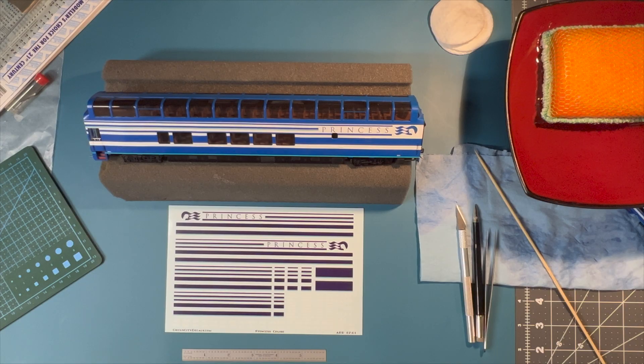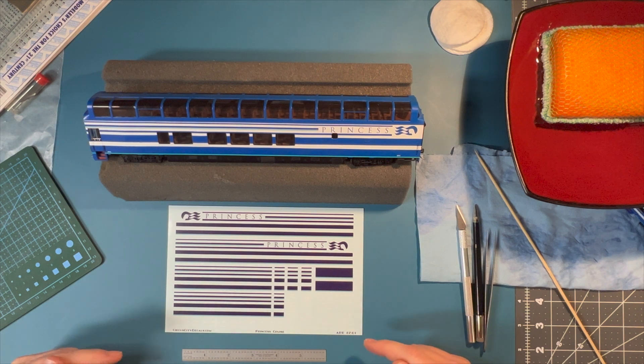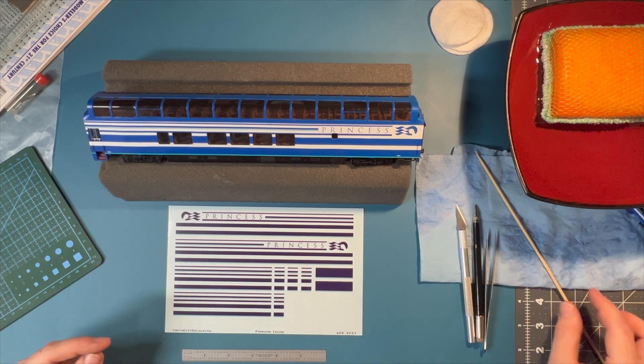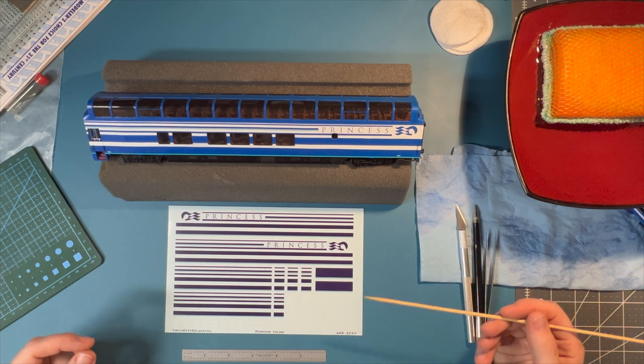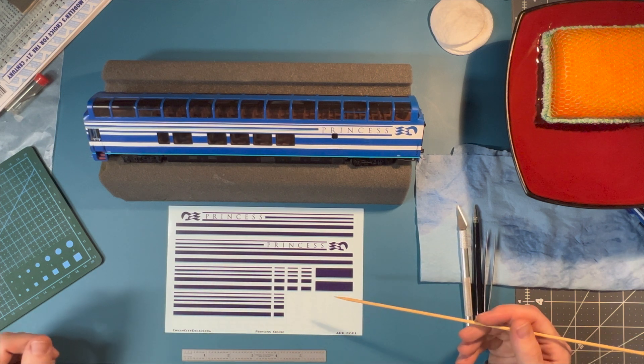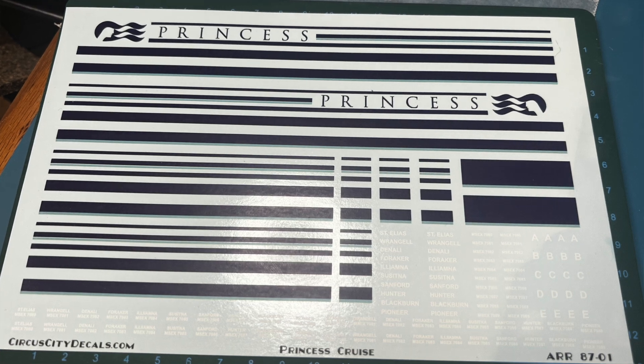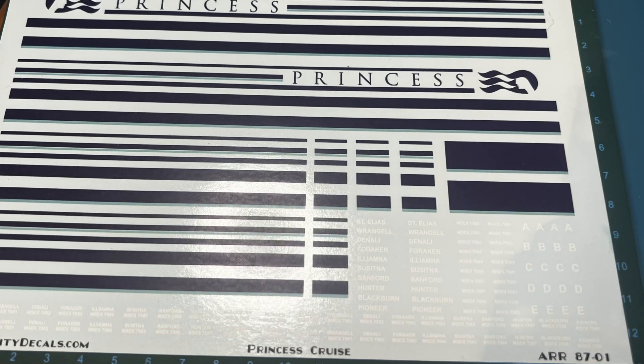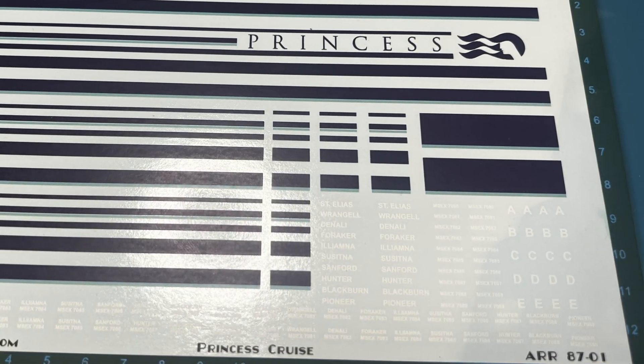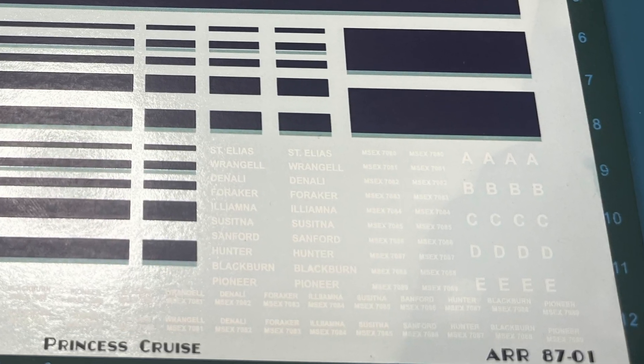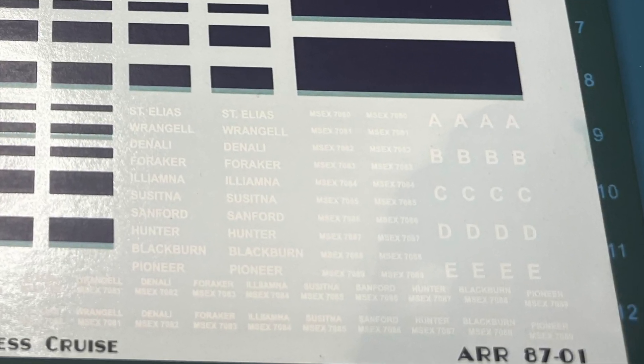So I was lucky enough that Circus City decals has the Princess Denali passenger car decals. It's a lot of decals in one sentence, isn't it? The only problem is that I'm running into, and you're not going to be able to see this on film, but I'll show a close-up image of this shot. The numbers that they have available are for all 10 passenger cars, but they only have two of them.